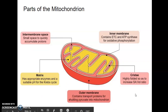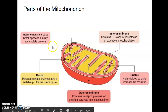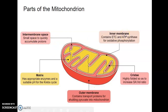Now we're getting into the parts of the mitochondrion. There are different subcomponents: the outer membrane, the inner membrane space, the inner membrane, the cristae, and the matrix. All of these different parts of the mitochondrion are very important for respiration and they all have their different roles.